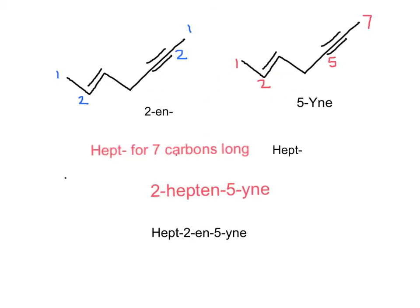When we combine the two family names, the -en goes before -yne.